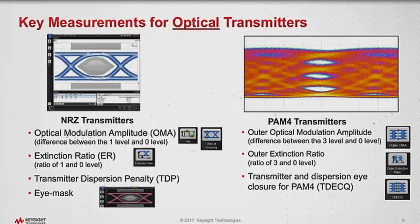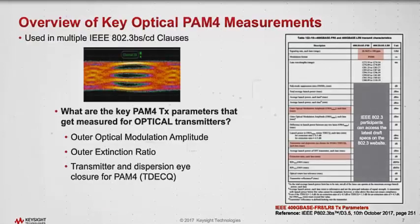There's a new measurement called transmitter dispersion eye closure for PAM4 — that's TDEC-Q, where Q stands for quercunary. Notice there is no longer a traditional NRZ mask test, and we'll explore why in a moment. For reference, looking at the latest draft 802.3BS draft 3.5 from mid-October, you can see the summary of outer OMA, outer ER, and TDEC-Q.